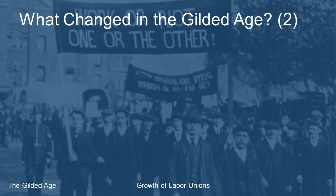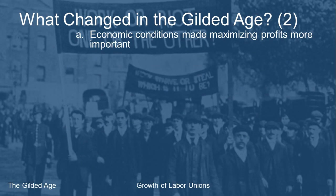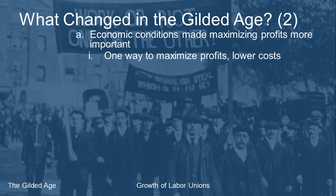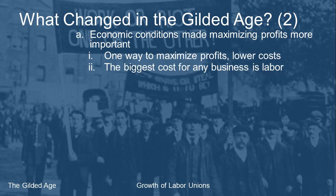The economic expectations of the Gilded Age focused on maximizing profits — not just making profits, but getting as much profit as possible. It wasn't only about being successful; it was about how successful you could be. One of the ways businesses could maximize profits was to lower costs, and the biggest cost for any business is always going to be its labor.